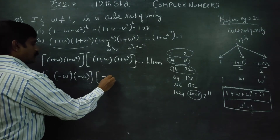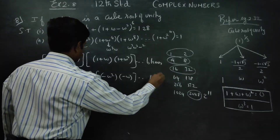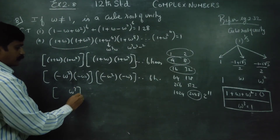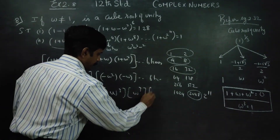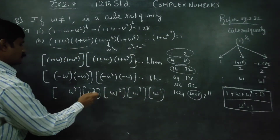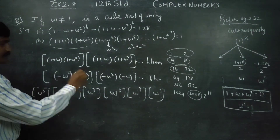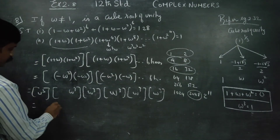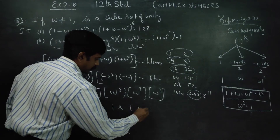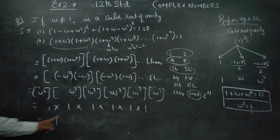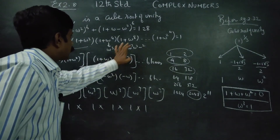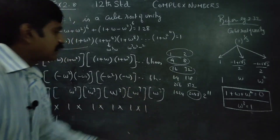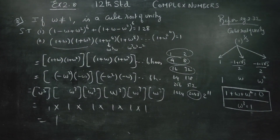1 plus omega gives minus omega squared. Here it is minus omega — six times. To simplify, we group them to make omega cubed. Since 1 plus 2 plus 3 equals 6, we can make 6 divided by 3 equals 2 groups of omega cubed. 1 into omega cubed equals 1. So all six pairs reduce to 1. Omega power 4 and omega power 8 similarly reduce to omega and omega squared respectively. Therefore your final answer is 1.